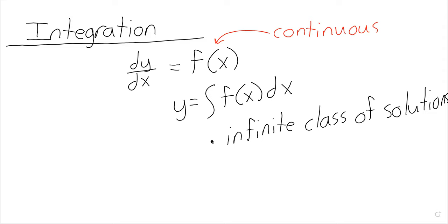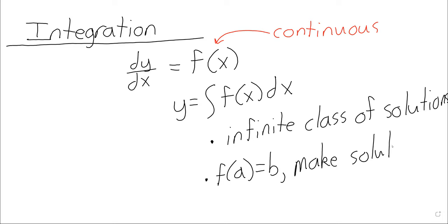As is usual with differential equations, there are an infinite number of solutions. But initial value problems are going to have unique solutions. That is, if we're given information — f(a) equals b — that will always make the solutions unique.